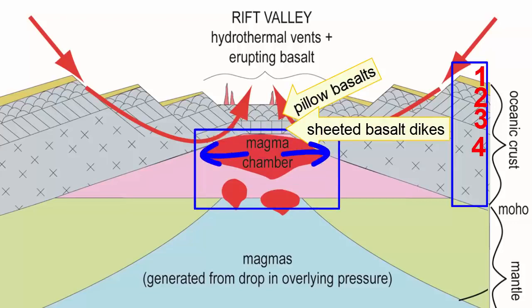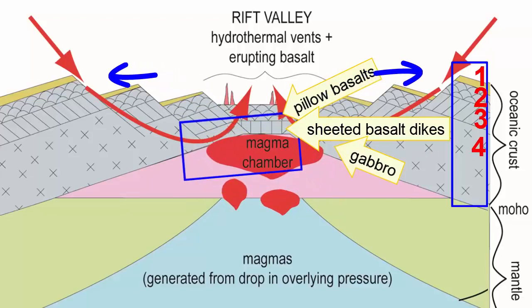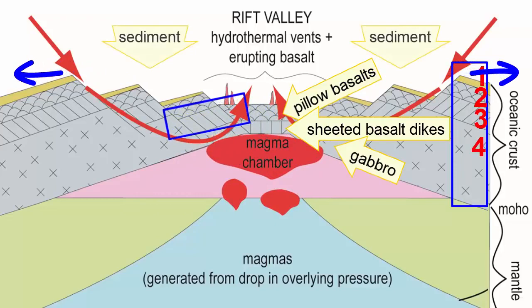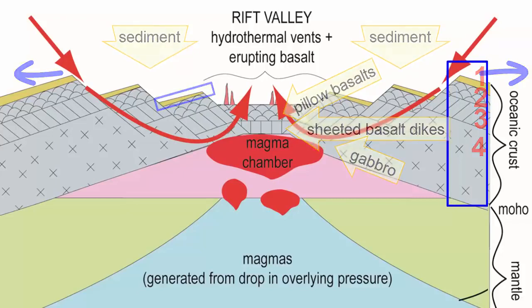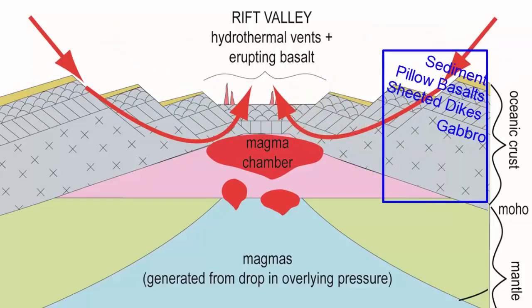The chambers that hold the magmas under these ridges will also spread. As their outer edges cool, they crystallize slowly to form a larger crystal rock with the same composition as basalt, but now called gabbro. As this crust spreads apart, the ocean will deposit fine grains of dust, ash, shells, and other debris — otherwise known as sediment. These are the four layers of ocean crust.